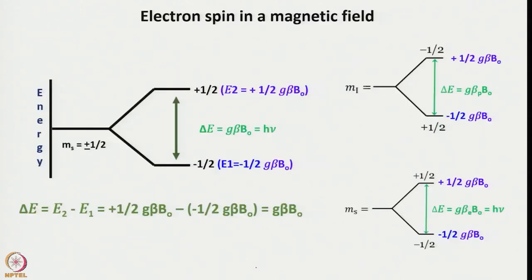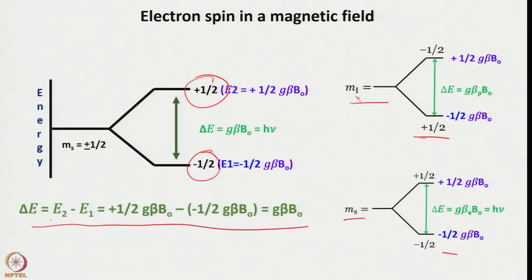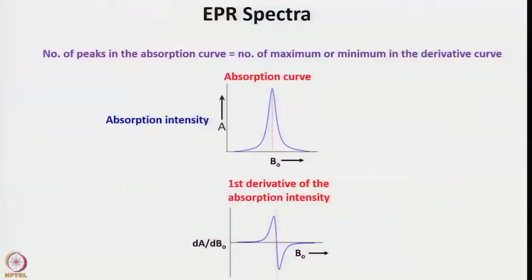In the magnetic field, spins can be aligned with or opposing the applied field. The lower energy state is Ms = −½ and the higher energy state is Ms = +½. The energy gap between these two states is represented by the corresponding term shown in the diagram. A typical EPR spectrum: the number of peaks in the absorption curve equals the number of maxima or minima in the derivative curve.